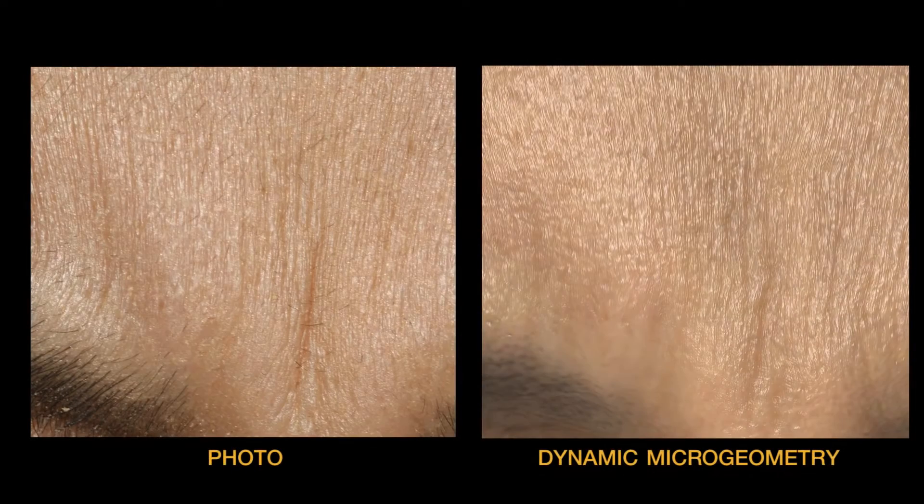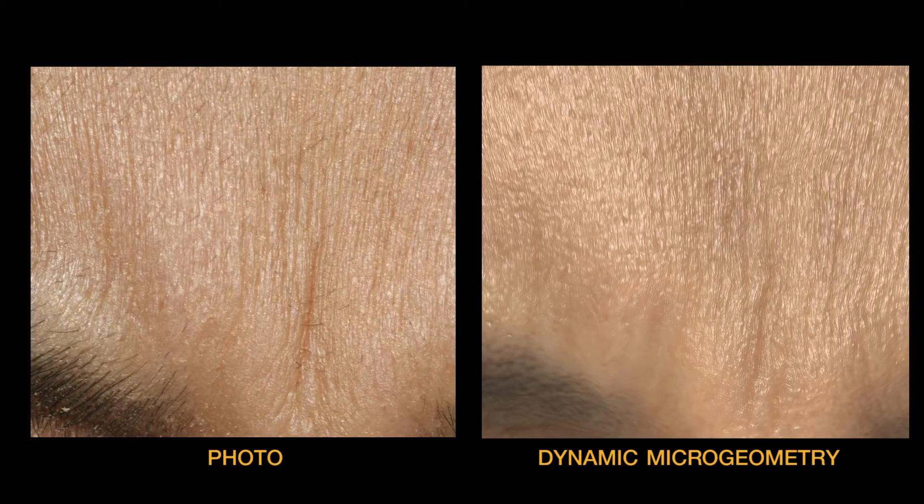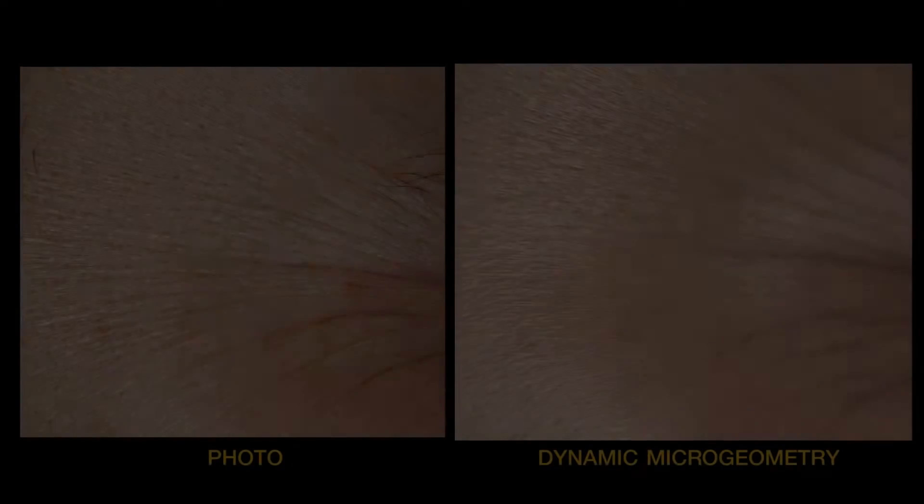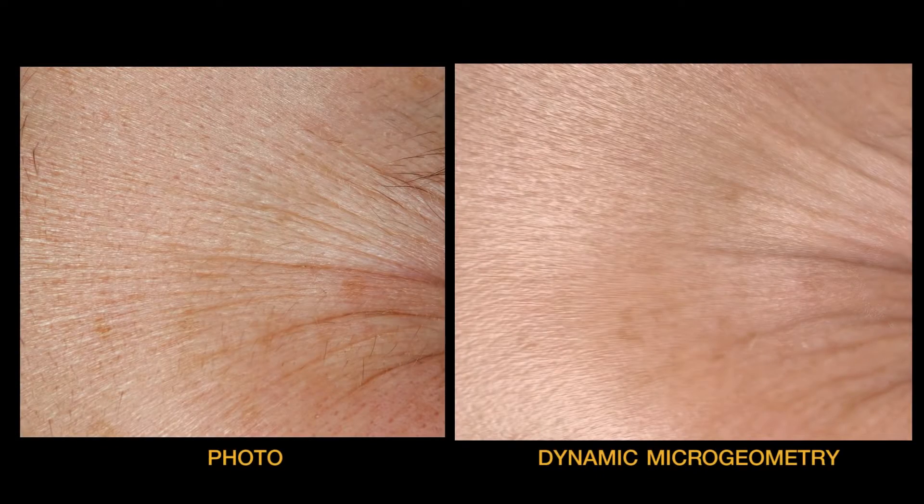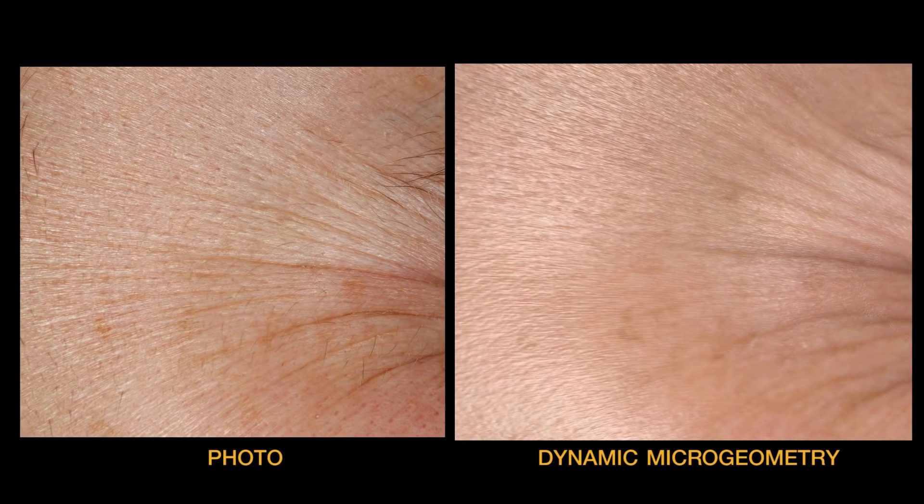We validate the technique by showing side-by-side photos of a face with a compressed expression lit by a point light and the corresponding simulated expression. As desired, the specular reflections show similar texture orientation and roughness variation in the photos and renderings.